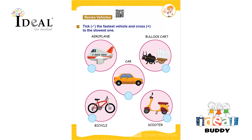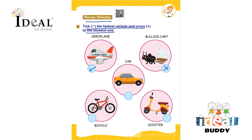Hello everyone. In this worksheet the topic is revise vehicles. Over here, tick the fastest vehicle and cross the slowest one. So over here the fastest is the aeroplane and the slowest one is the bullock cart. So here the child has to identify the fastest vehicle and slowest vehicle — tick the fastest one and cross the slowest one to complete the worksheet.